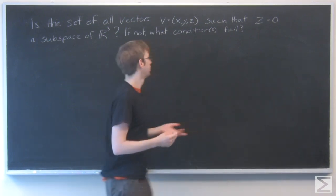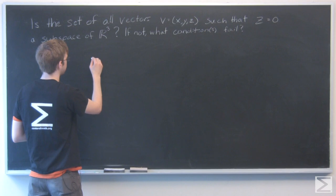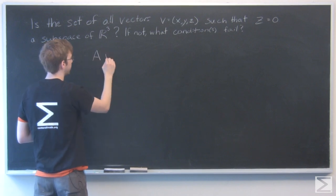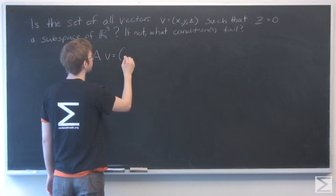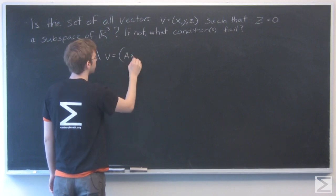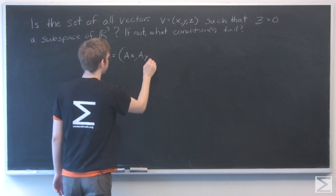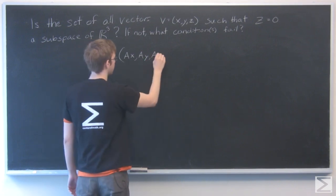So let's start with scalar multiplication. If we have a scalar a multiplied by our vector v, that's going to be ax, ay, and az.